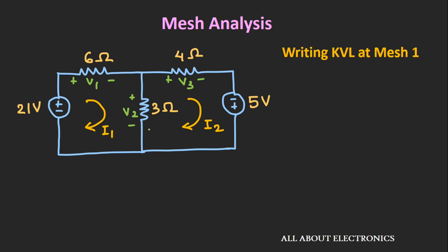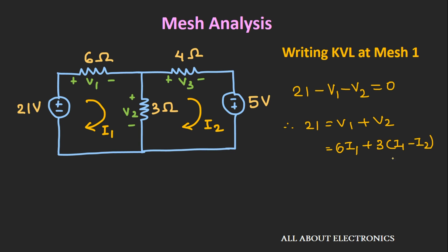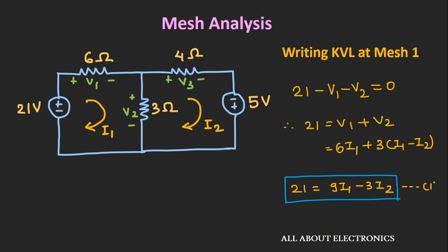Now if we apply Kirchhoff's voltage law at the first mesh, we can write 21 − V1 − V2 = 0, which means 21 = V1 + V2. V1 is 6×I1, and V2 is 3×(I1 − I2), because the net current through the 3Ω resistor is the algebraic sum of I1 and I2, giving I1 − I2. Simplifying, we get 21 = 9I1 − 3I2. Let's call this equation number 1.